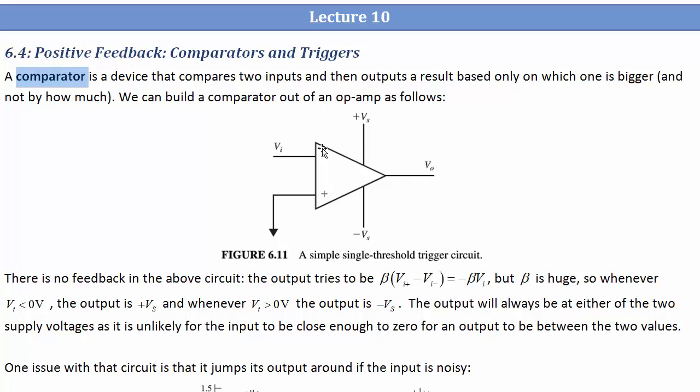A comparator, in general, is just a device that compares two inputs and then puts an output that just depends on which one was bigger, not on the relative size of the two inputs.